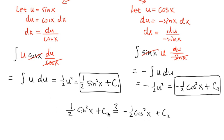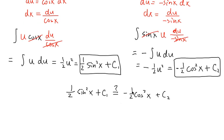So let me put this together. Is it true that 1 half sine square x plus c1 is the same as negative 1 half cosine square x plus c2? Well, let's do some change with this. Let me put the negative 1 half cosine x onto the other side. So I will get 1 half sine square x plus 1 half cosine square x. And then let me put the c1 onto the other side. So this will be c2 minus c1.